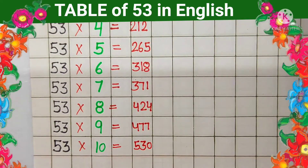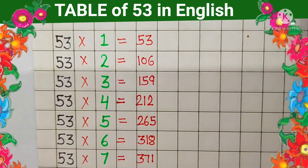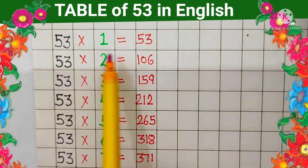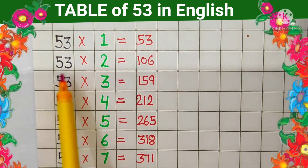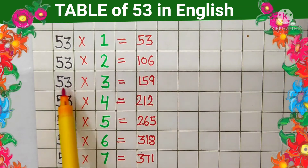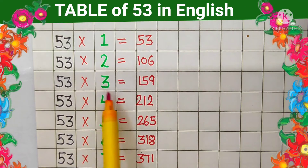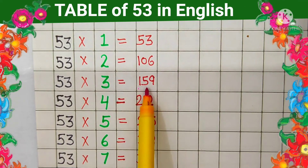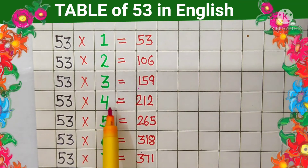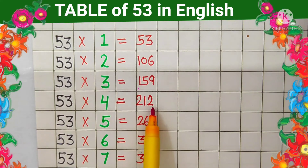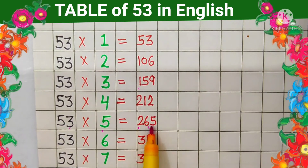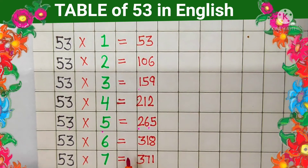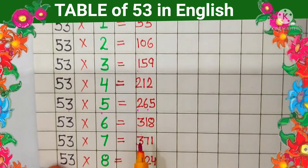Table ko repeat kareenge. 53 ones are 53, 53 twos are 106, 53 threes are 159, 53 fours are 212, 53 fives are 265, 53 sixes are 318.